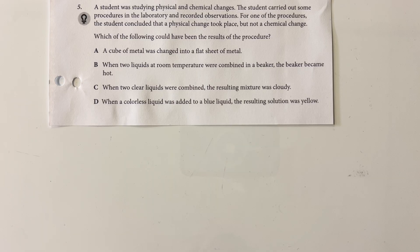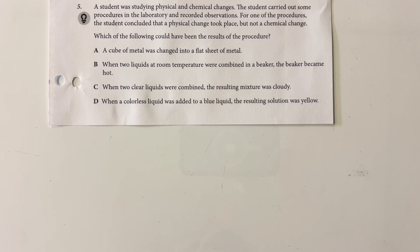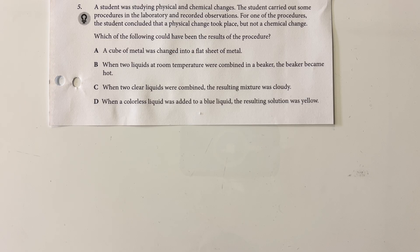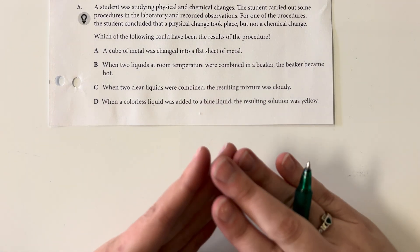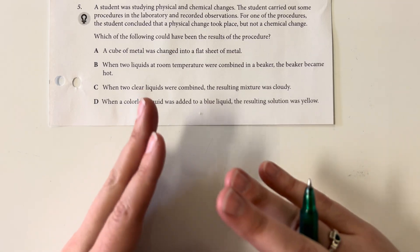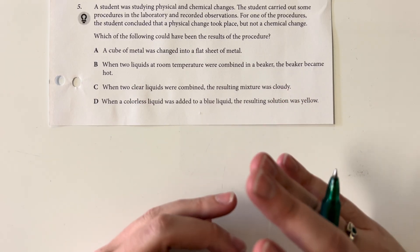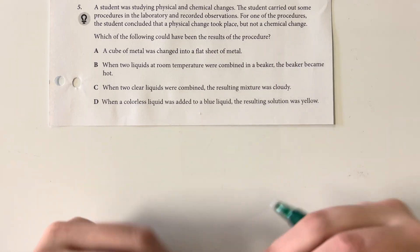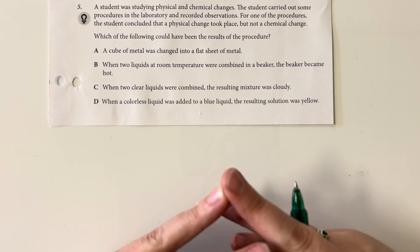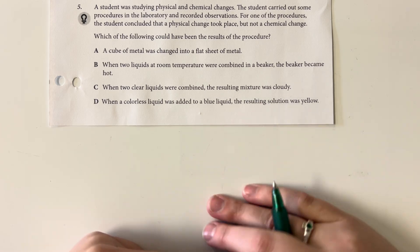A student was studying physical and chemical changes. The student carried out procedures in the lab and recorded observations. For one procedure, the student concluded that a physical change took place, not a chemical change. Which of the following could have been the results? As a reminder, chemical changes are fundamental changes — the thing I had is fundamentally different than before. A physical change is non-fundamental; it is still the same substance, just in a different shape or form.